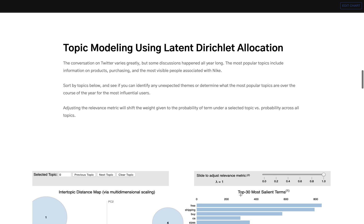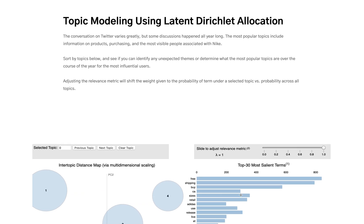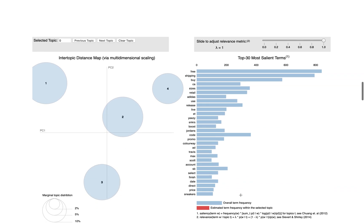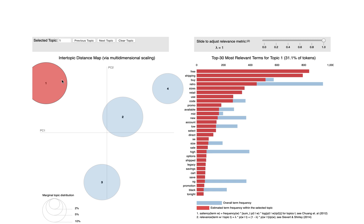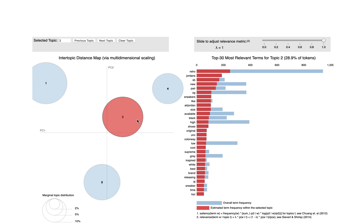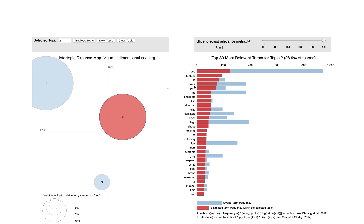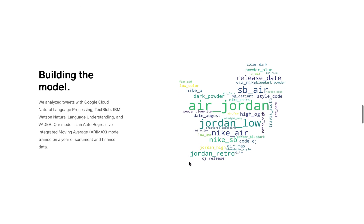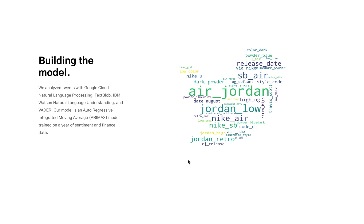After this, we started topic modeling using LDA and pulled all of the most relevant topics from the most influential users. As you can see, when we look at different topics, you'll see terms about purchasing and product, and different terms become available on different topics. We also started processing the text to analyze what was being said on Twitter. On the right, you can see a word cloud based on the Air Jordan, which is one of the products that we analyzed for this project.